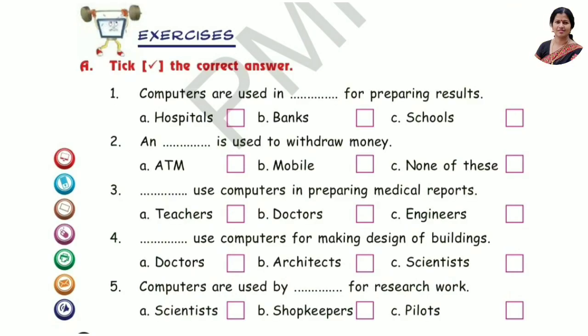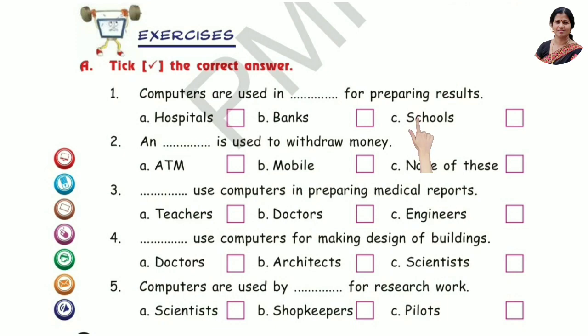Tick the correct answer. First one: Computers are used in DASH for preparing results. Options are Hospital, Bank, Schools. The answer is Option C: Schools.